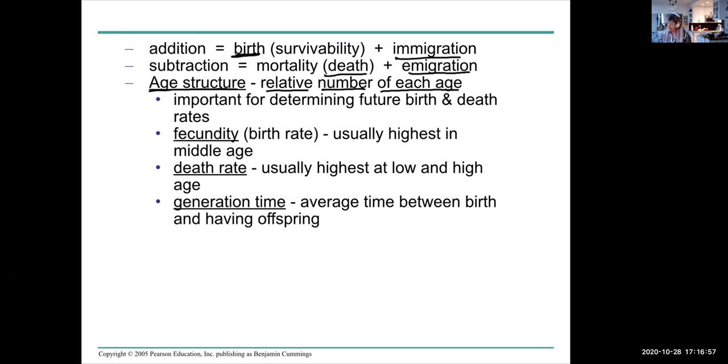The birth rate, otherwise known as fecundity, is usually highest in the middle age of the population. The death rate, however, is usually highest at very low ages because lower aged individuals are more vulnerable to predators, for example, and at high age when age simply catches up to an individual and they don't survive over a certain age.